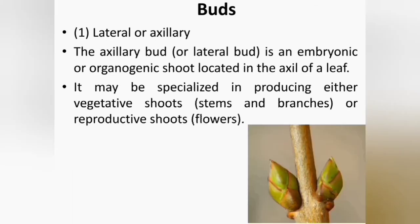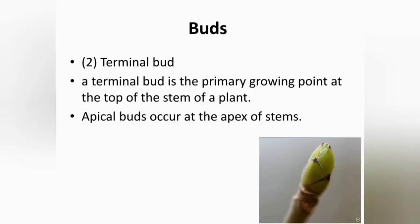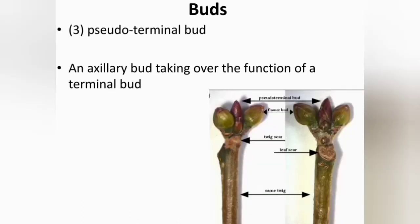Now, terminology based on buds. Buds are present at the apex or axillary region of the stem. According to their position, they are classified as lateral, terminal and pseudo-terminal buds. Lateral buds, otherwise called axillary buds, are embryonic shoots located in the axil of a leaf; they may be specialised in producing either vegetative or reproductive shoots. A terminal bud is the primary growing point at the top of the stem, occurring at the apex. A pseudo-terminal bud, or false terminal bud, is an axillary bud taking over the function of a terminal bud when the apical end of the twig dies.